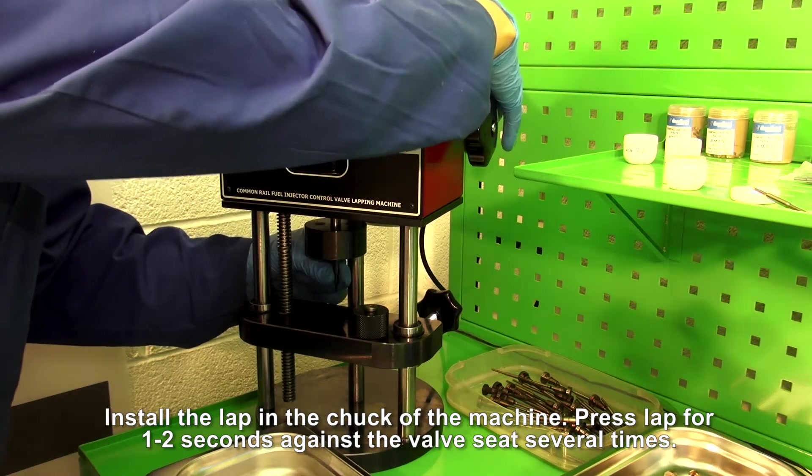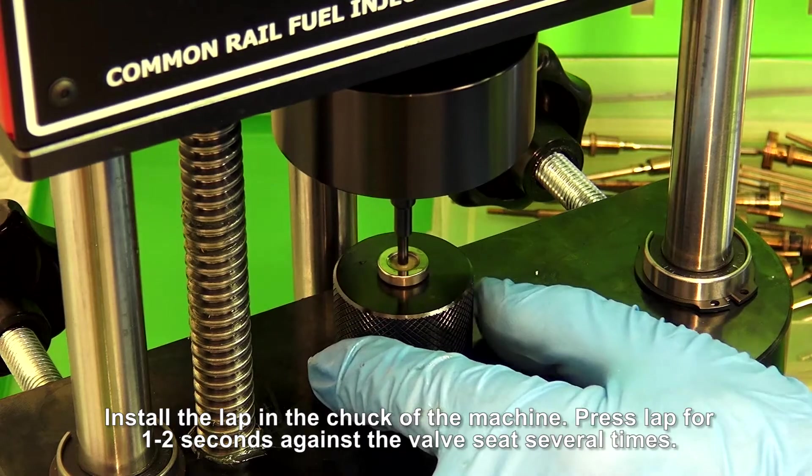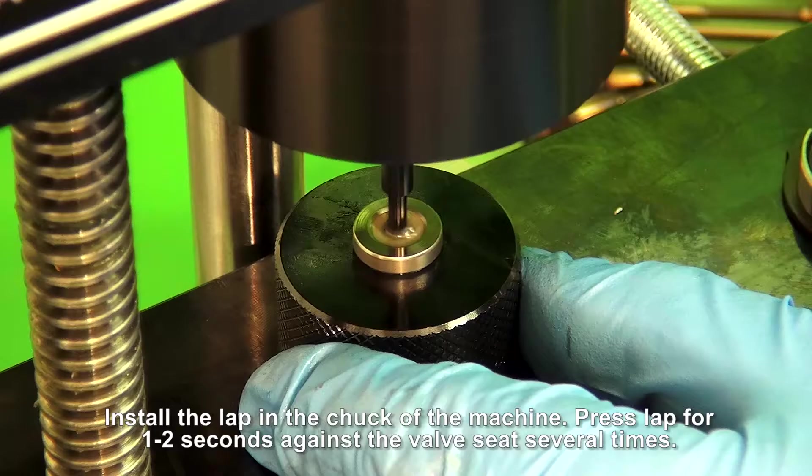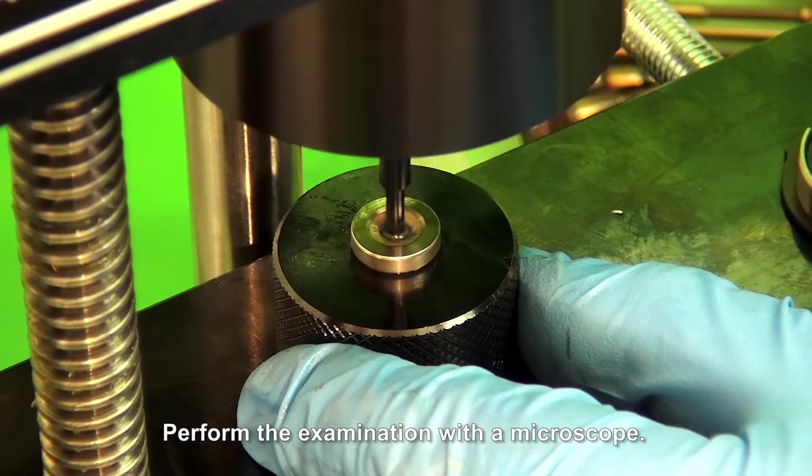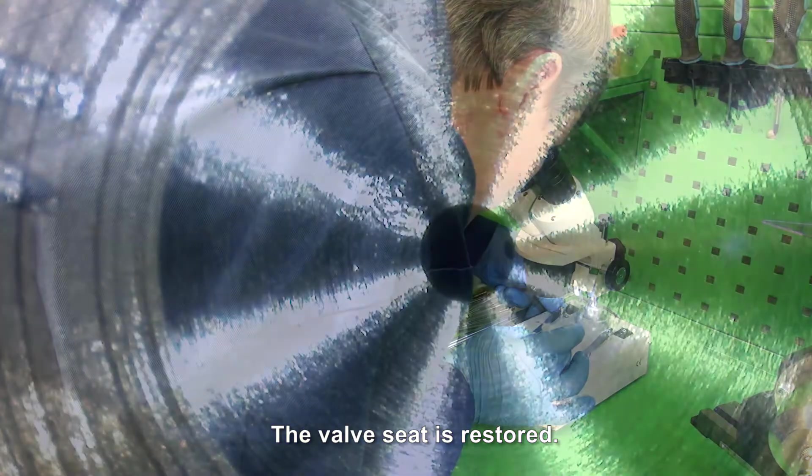Install the lap in the chuck of the machine. Press the lap for 1-2 seconds against the valve seat several times. Perform the examination with a microscope. The valve seat is restored.